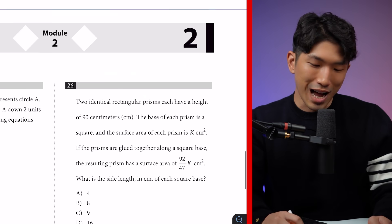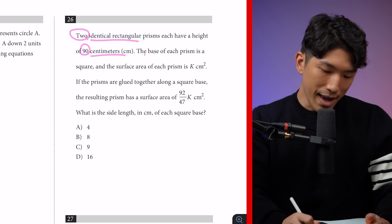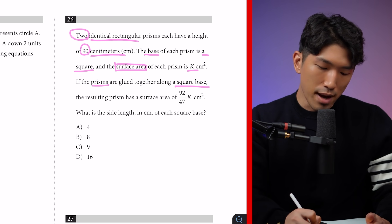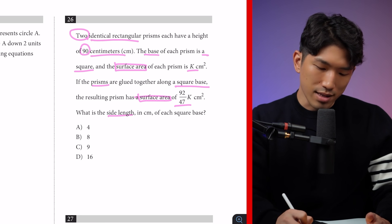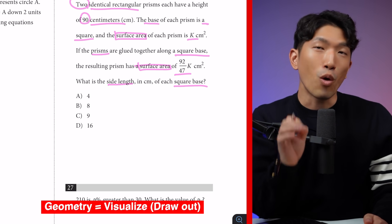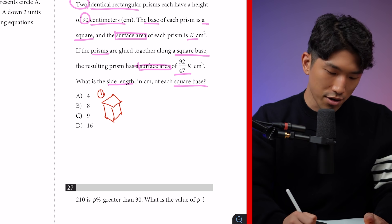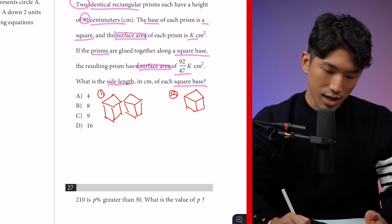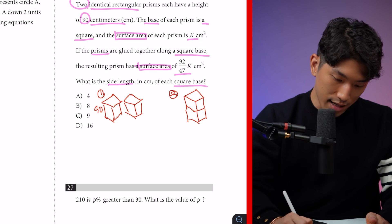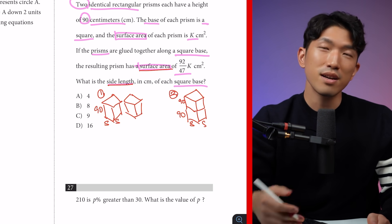Last but not least, one of the hardest questions I've seen on the SAT in the past 10 to 11 years. Two identical rectangular prisms have a height of 90 centimeters each. The base of each prism is a square and the surface area of each prism is K centimeters squared. If the prisms are glued together on the square base, the resulting prism has a surface area of 92/47·K. What is the side length in centimeters of each square base? For geometry questions, the first thing you want to do is visualize — always draw it out. We have two prisms side by side, and then a second scenario where they are stacked on top of each other. The height is 90, and I'll call the square base side length S.